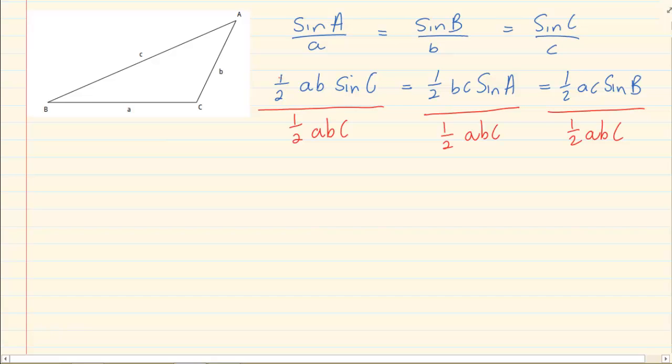If we cancel, we have sin C over c. If we cancel on the next line, we have sin A over a. And if we cancel the last one, we have sin B over b.